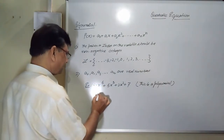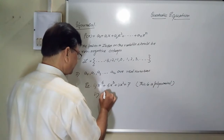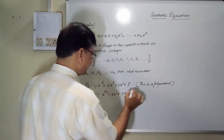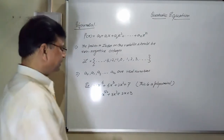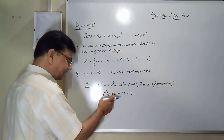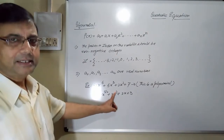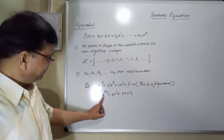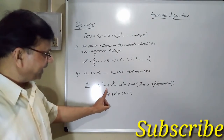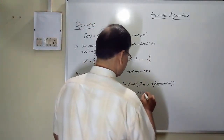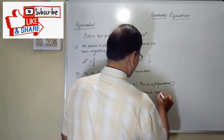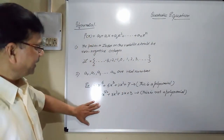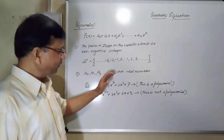Second example: x^(5/2) + 3x² + 2x + 3. Is it a polynomial? The powers 2 and 1 are non-negative integers — true. But for x^(5/2), the power 5/2 is not an integer. That is why this is not a polynomial. So as per the definition, all conditions should be satisfied for an expression to be a polynomial.